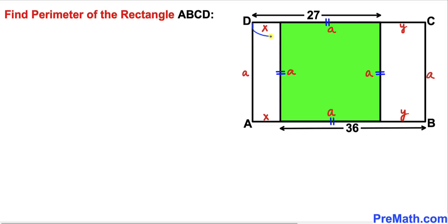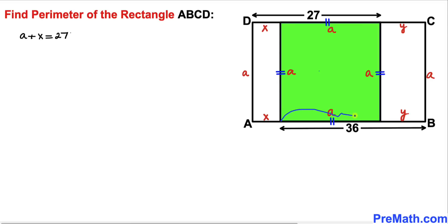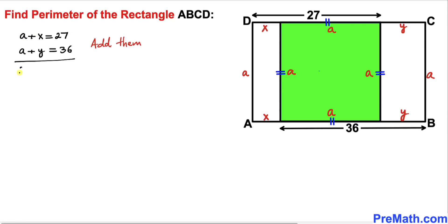Let's focus on this length which is 27 units — we know this is the sum of X plus A, so we can write A plus X equal to 27 units. Now let's focus on this length which is 36 units, and this is equal to the sum of A plus Y, therefore A plus Y equal to 36. Now let's add these two equations: A plus A gives us 2A, plus X plus Y equal to 63.